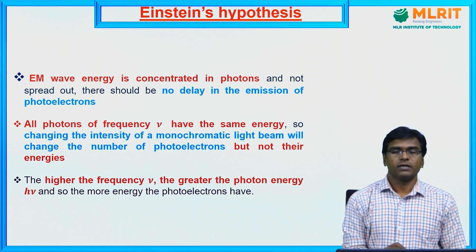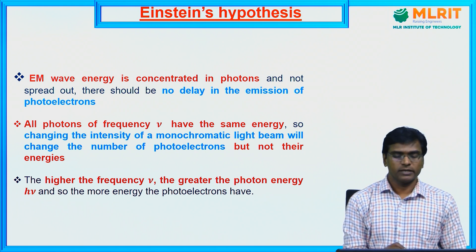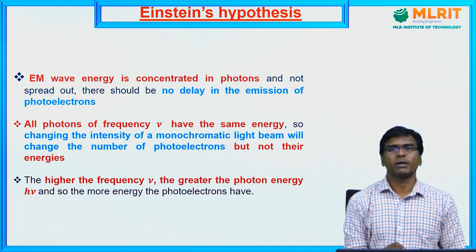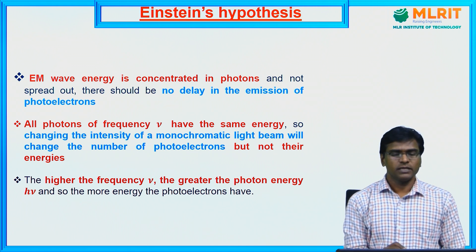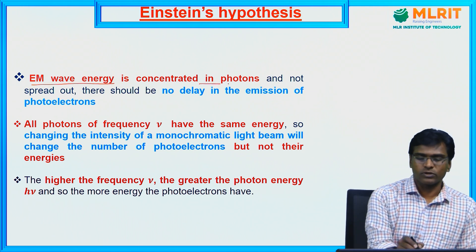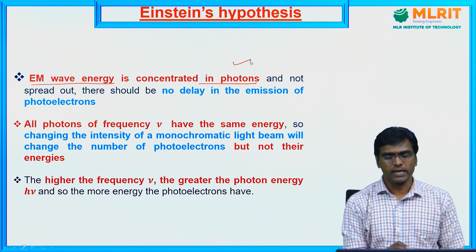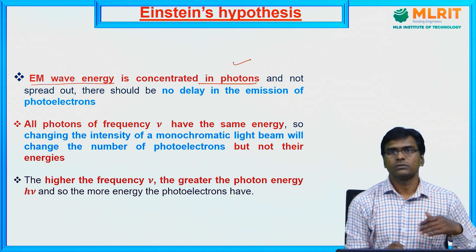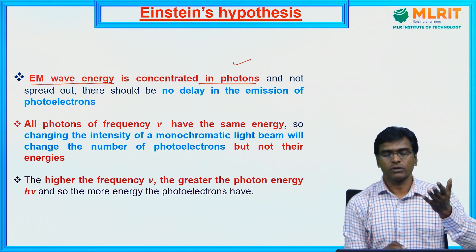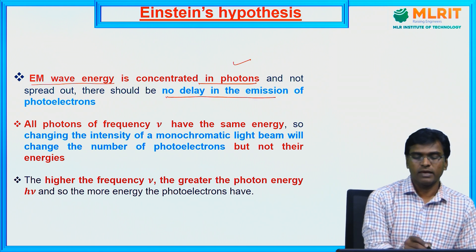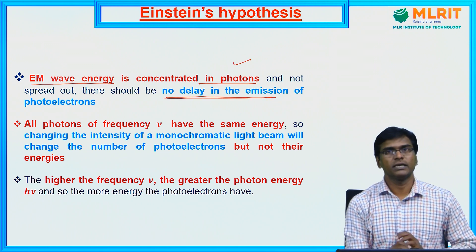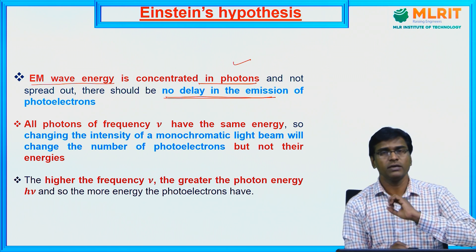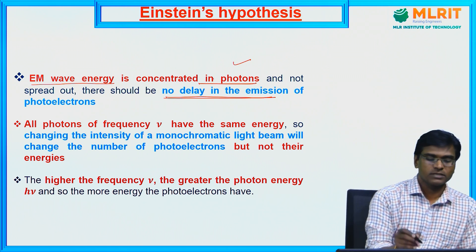Then Einstein came up with the idea based on Planck's blackbody radiation. Planck stated that electromagnetic radiation consists of packets of energy called quanta or photons. Einstein proposed that electromagnetic wave energy is concentrated in photons. Since the energy is concentrated in photons, electrons absorb these photons and immediately come out of the material — therefore there is no time delay in the emission of photoelectrons.